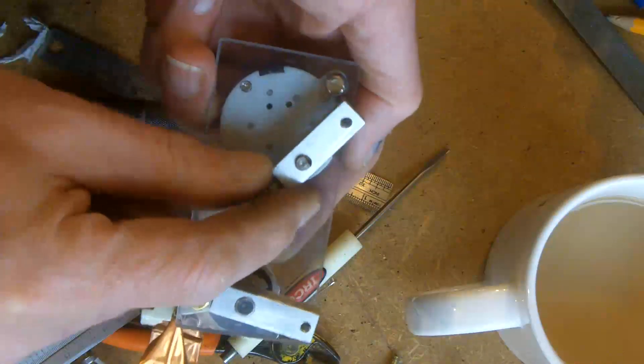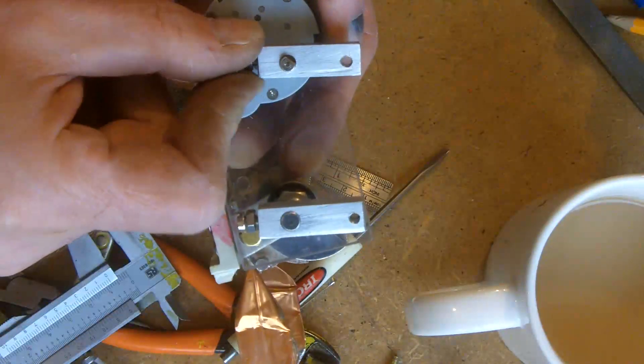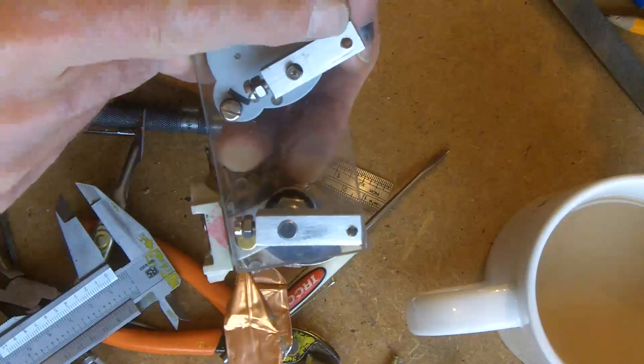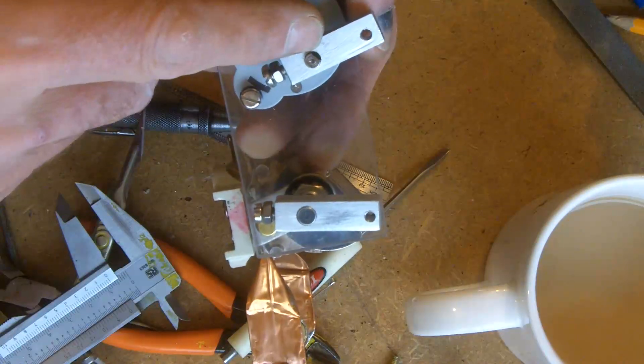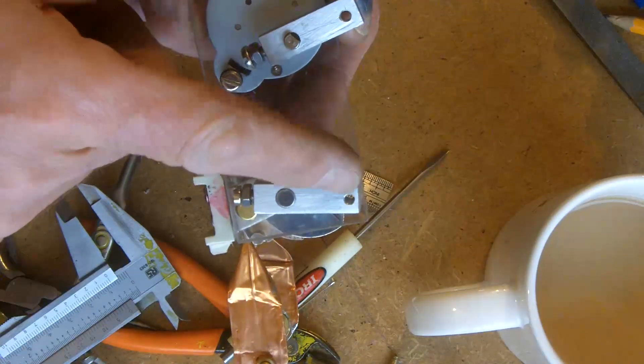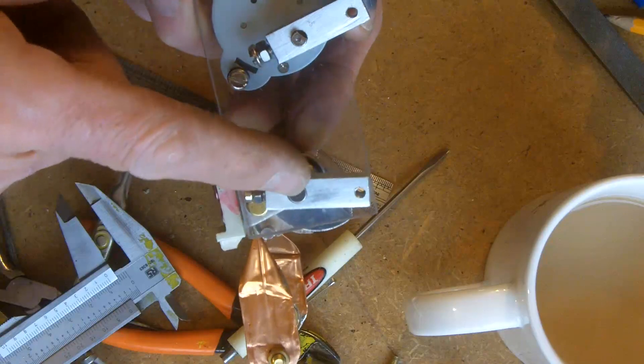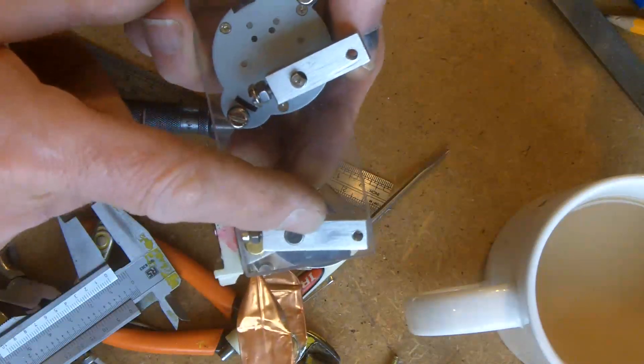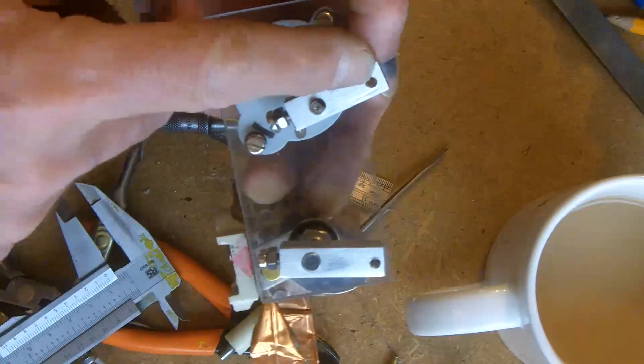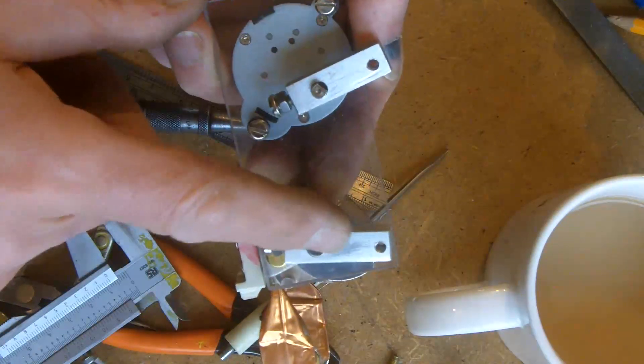This is the little rotor arm, so the distance from centre to centre there is 19.13 or thereabouts, and the distance from the centre there to there is 20.06 or thereabouts. The important thing is that this distance is shorter than that distance.